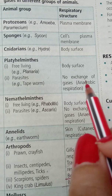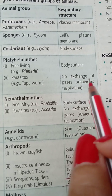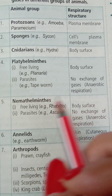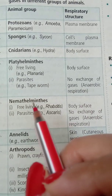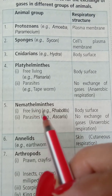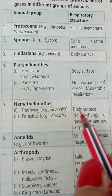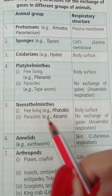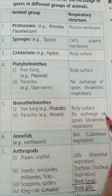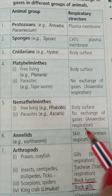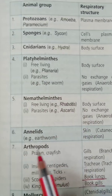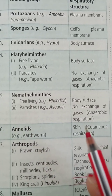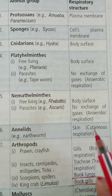Next is Nematodes (Nemathelminthes). The free-living form, example Rhabditis, respires by the body surface. The parasitic form is Ascaris — no exchange of gases, that is anaerobic respiration. Then Annelids, example the earthworm — the structure is the skin, that is cutaneous respiration.